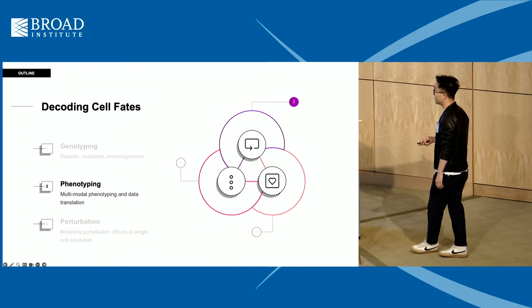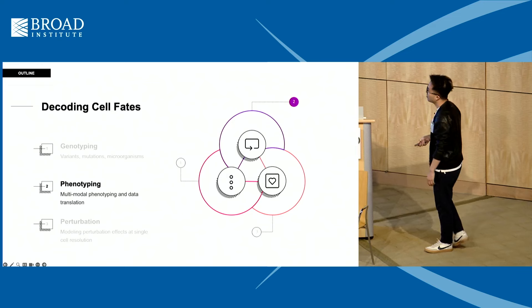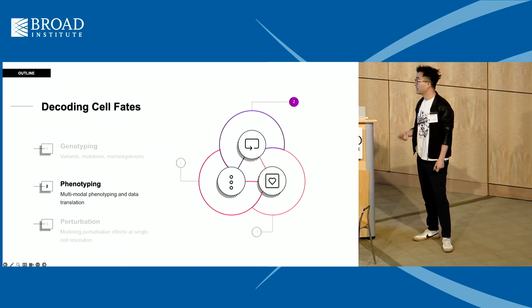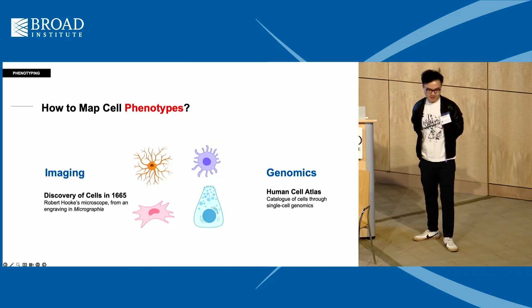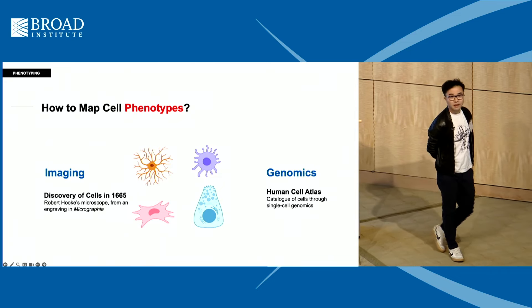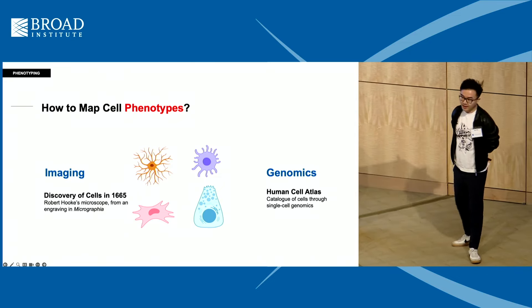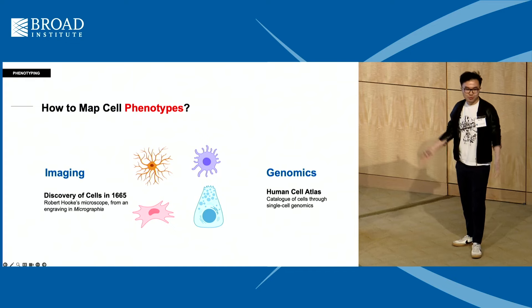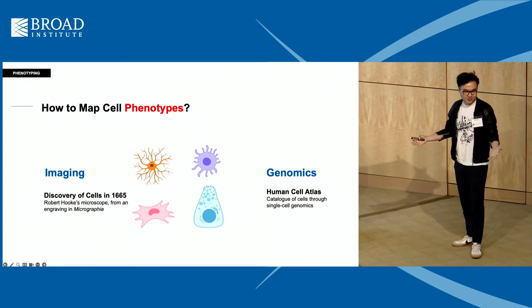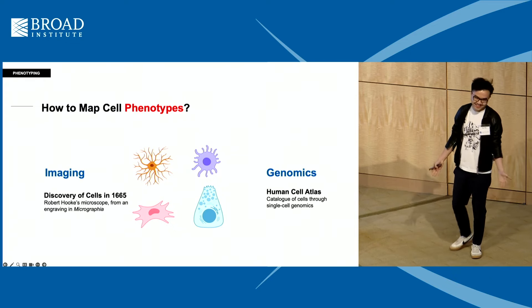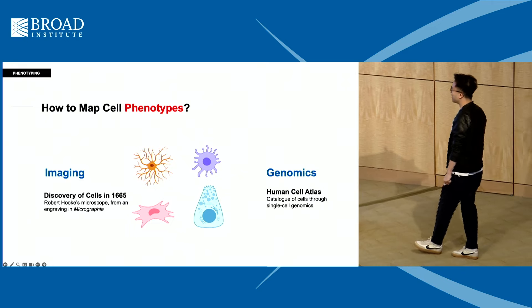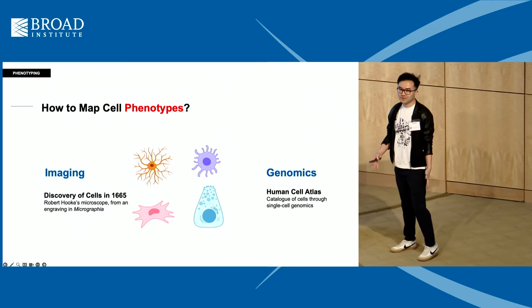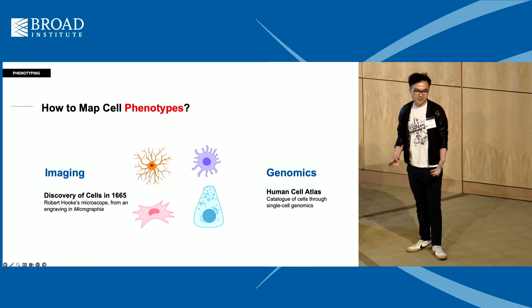That was a brief appetizer on using targeted in situ sequencing to read out genotypes. The next story is about multimodal phenotyping—the main course. The fundamental question we ask is: how do we actually map cell phenotypes? Here at the Broad we love sequencing, and I did a lot of single-cell RNA-seq as a postdoc, but there are pros and cons to different phenotyping methods.